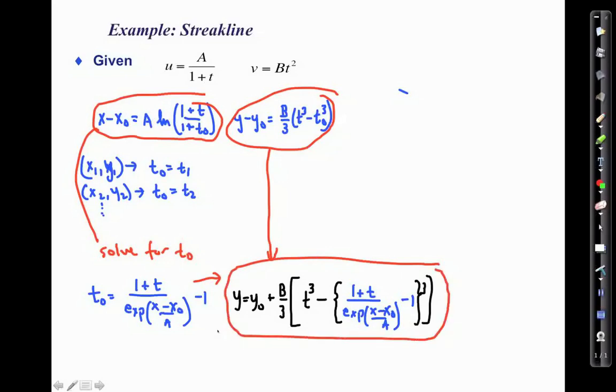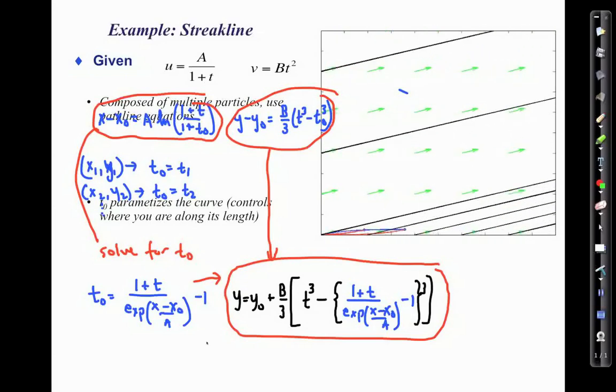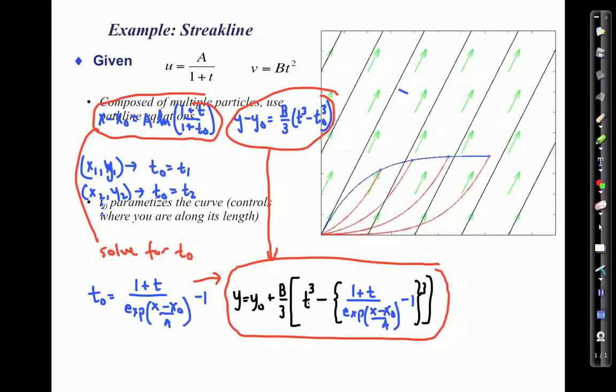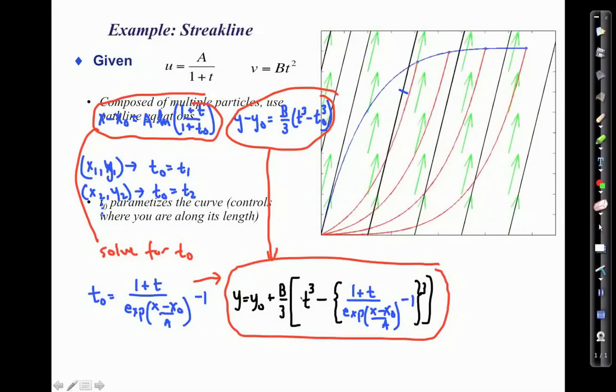What does this look like? Well, t again here is, we have to say at what instant in time we want to visualize it. So t is a constant for this. That tells us where in time we are to pick our curve. x_naught and y_naught are also constants. So here we have y is some function of x and it's got an exponent and then some cubes. So this is a pretty complicated function. It's kind of hard to see exactly what it will look like. So I've gone ahead and put it on our plot here again.